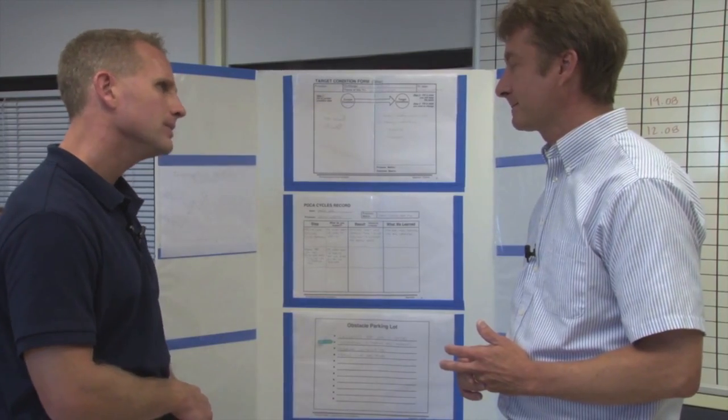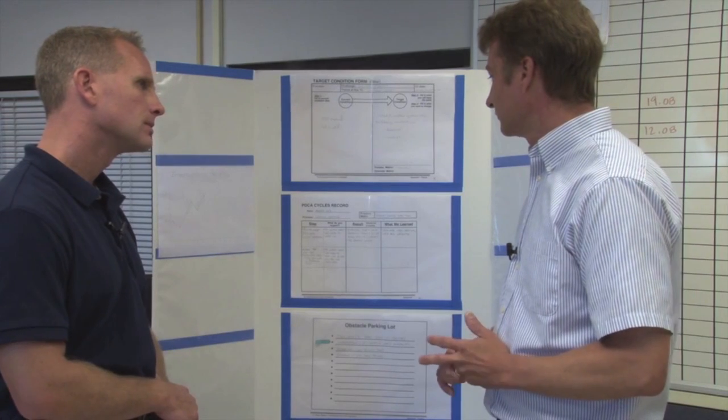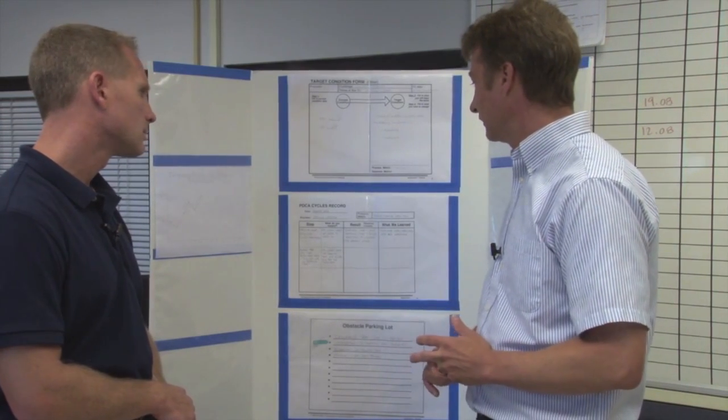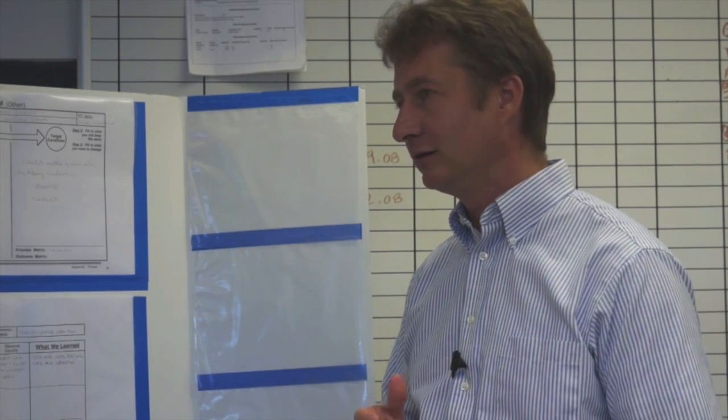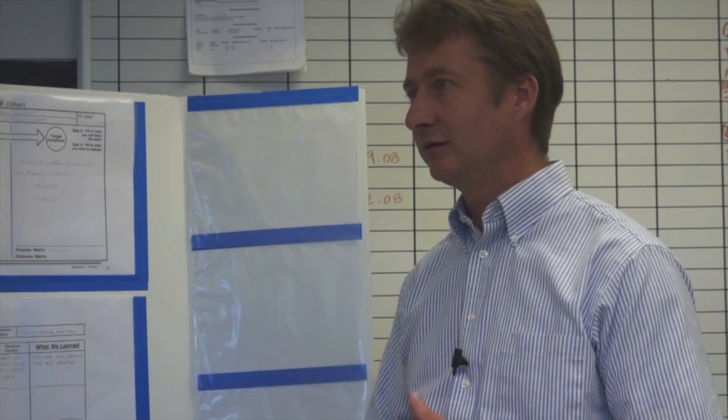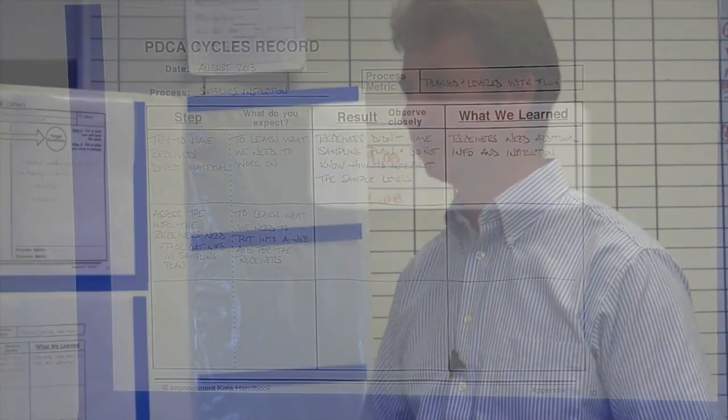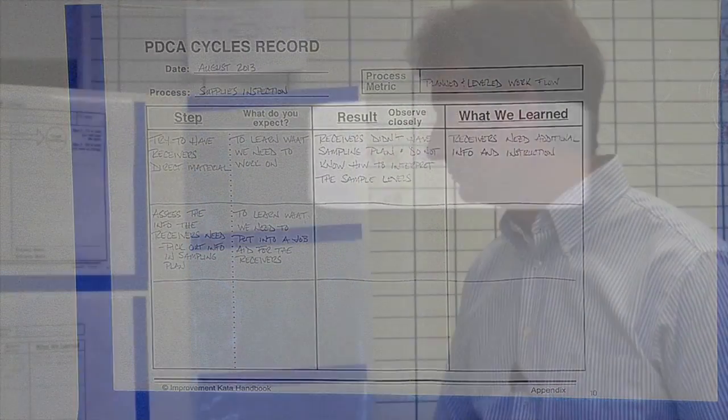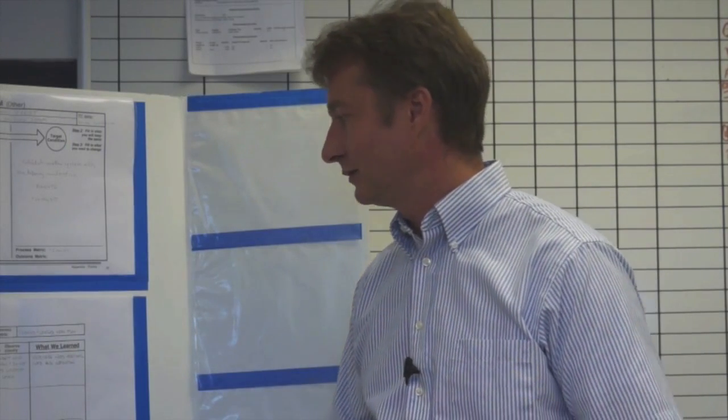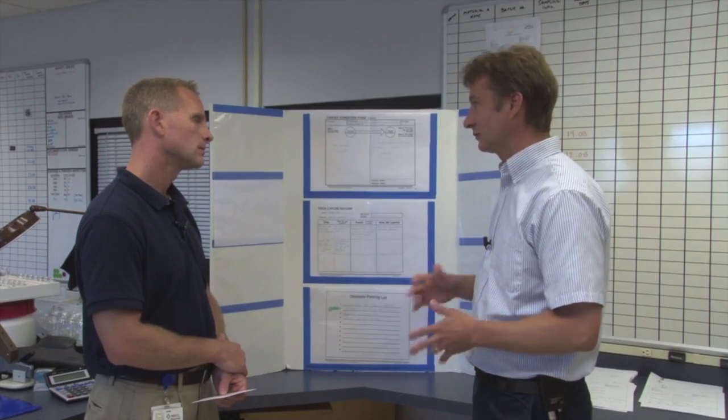What actually happened though? Well, what happened is that the receivers didn't have the sampling plan and didn't know how to interpret the ANSI tables. So they didn't have the information they needed to direct material movement. All right. And in the end, what did you learn? We learned that the receivers need additional information and some instruction. Okay.